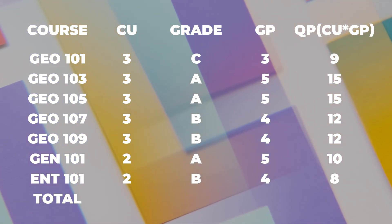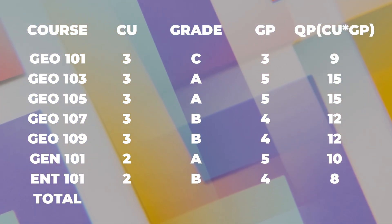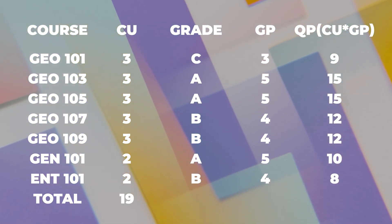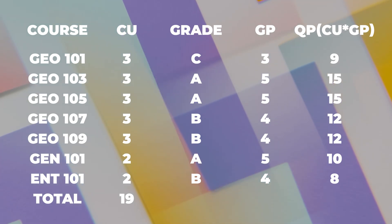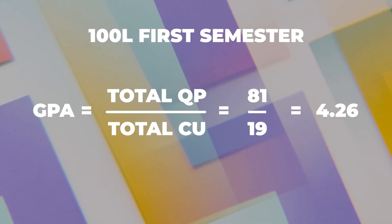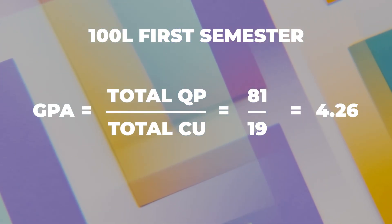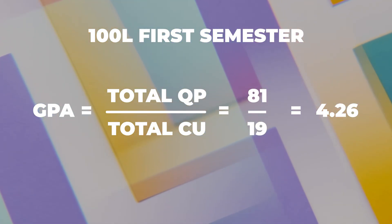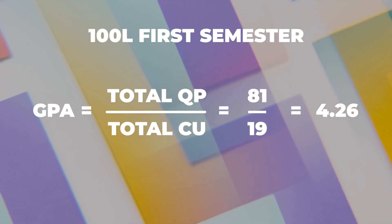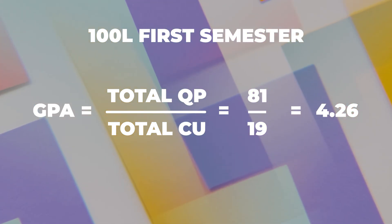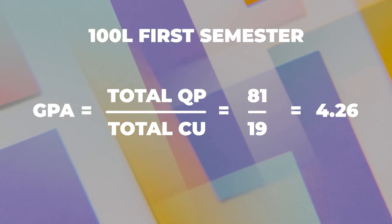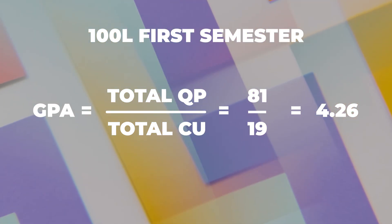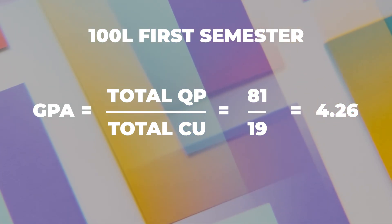The total credit unit is 19 and the total quality point is 81. So 81 over 19 gives you 4.26. His GPA for first semester 100 level is 4.26.